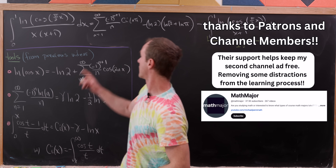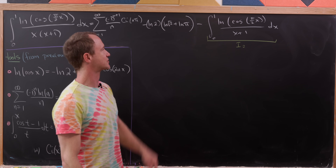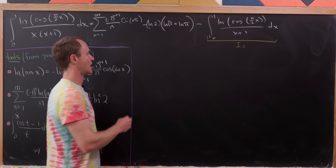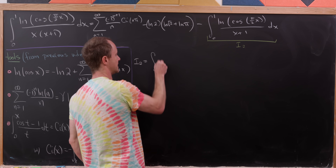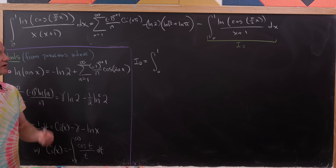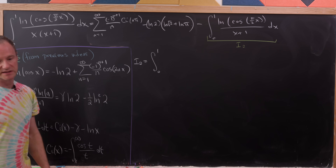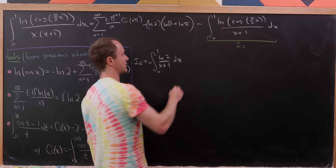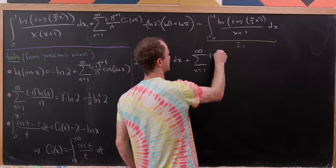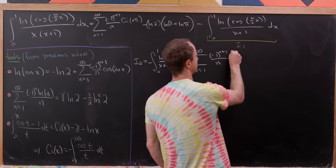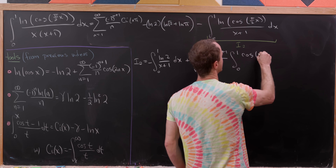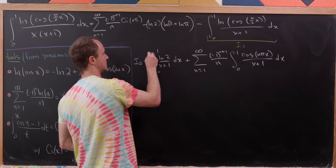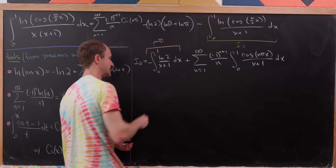Now let's work on I₂. We apply the natural log expansion to ln(cos(πx/2)) in the integrand 1/(x+1). The −ln(2) piece gives minus ln(2) times the integral from 0 to 1 of 1/(x+1) dx, which evaluates to −ln²(2). The sum piece gives (−1)^(n+1)/n times the integral from 0 to 1 of cos(nπx)/(x+1) dx.